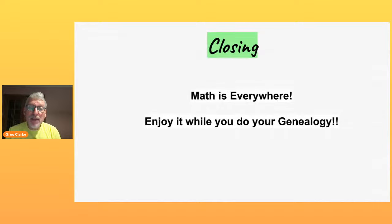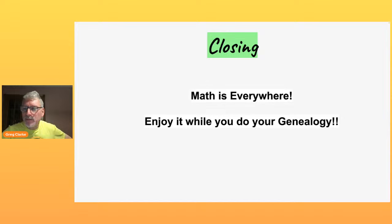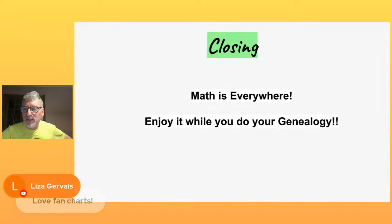I think that gets me to the end of my presentation. I'm just leaving you with the message that math is everywhere — enjoy it while you do your genealogy. Let me look through and see if there were any questions or comments in the chat. Comments about the 'angry E' (Sigma), fan charts — wonderful, thank you. And yes — use the hypotenuse to find the ancestor, that's right!